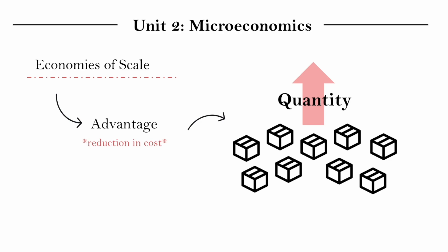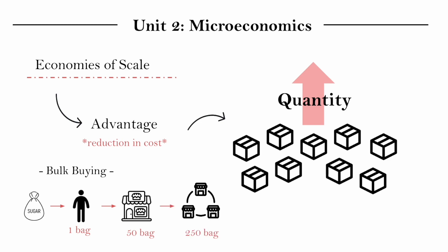Some reasons for why this occurs is, for example, bulk buying. We know that the cost from when you as an individual buy a bag of sugar, to when a bakery buys 50 bags of sugar, and to when a bakery franchise buys 250 bags of sugar. As the quantity increases, the price per bag of sugar starts to decrease, which allows the cost of producing a good to decrease as the quantity you produce starts to increase.